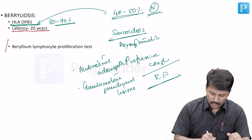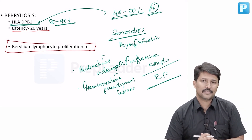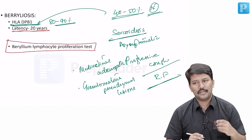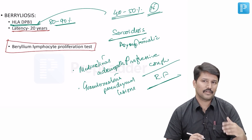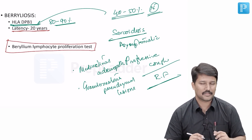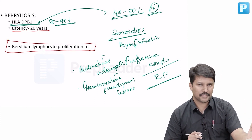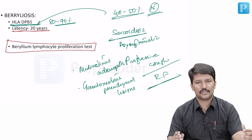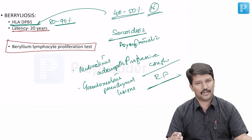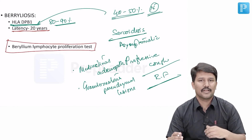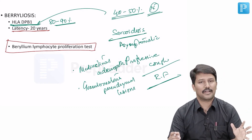Apart from that, you can do the beryllium lymphocyte proliferation test. This is a test done to identify lymphocytes which are sensitized by beryllium. So if you have a context where someone has a chronic lung condition resembling sarcoidosis, radiological evidence supporting the possibility of sarcoidosis, a history of beryllium exposure, and you confirm that these patients have beryllium-sensitized lymphocytes — then your diagnosis of berylliosis is kind of confirmed.